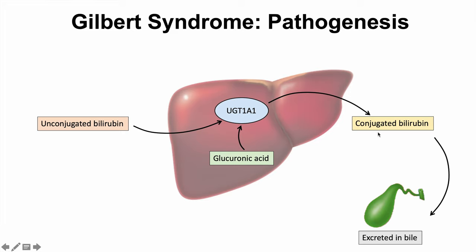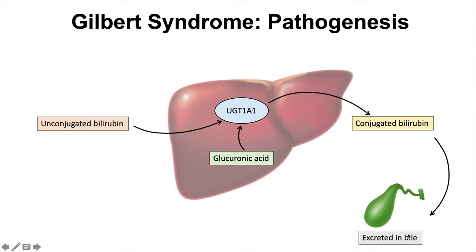In Gilbert syndrome, this mechanism is mildly deficient. We lose part of this mechanism, meaning we don't get full conversion of unconjugated bilirubin to conjugated bilirubin. So unconjugated bilirubin can build up, leading to signs of jaundice. Eventually the episode can resolve because although the mechanism is mildly deficient, it can still slowly process the unconjugated bilirubin to eventually excrete it — that is why the jaundice itself will eventually resolve.